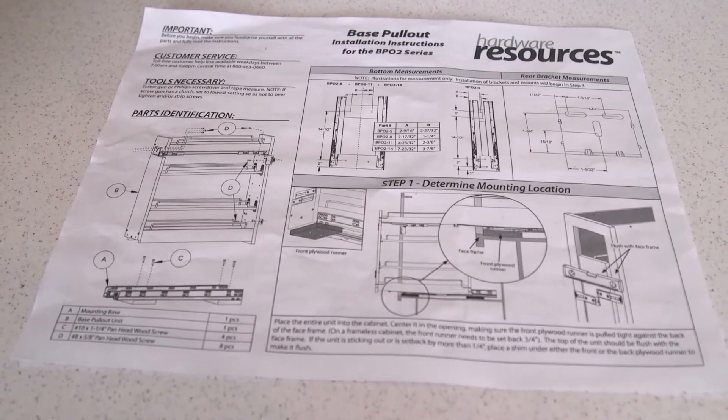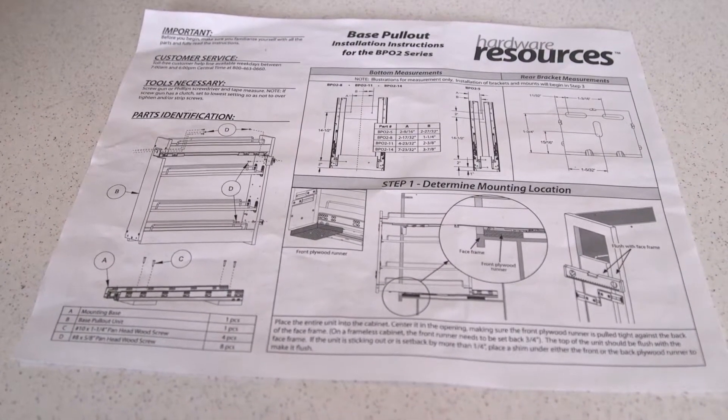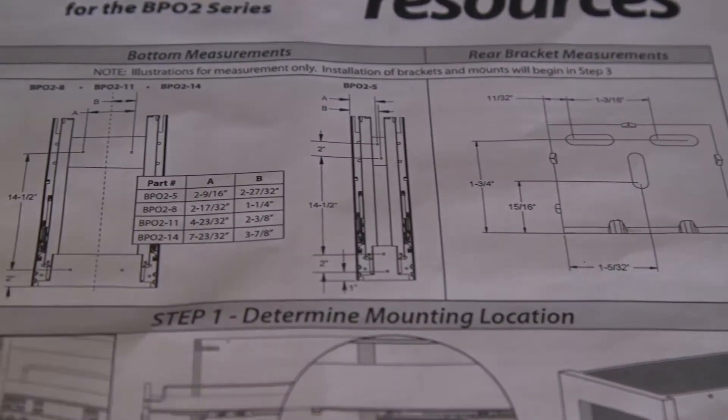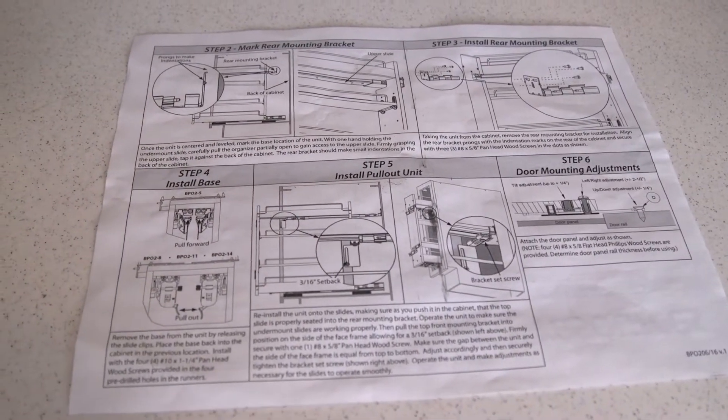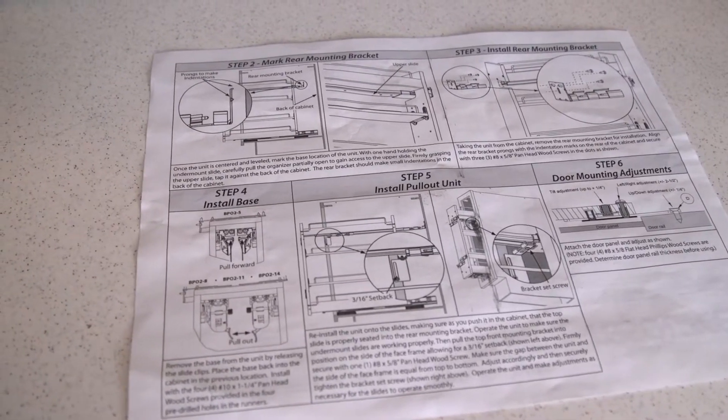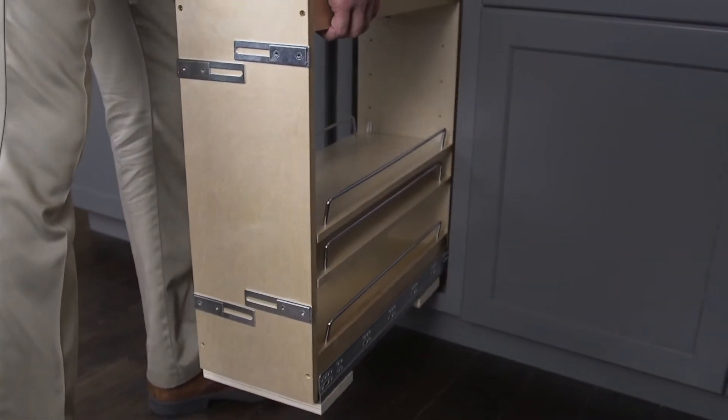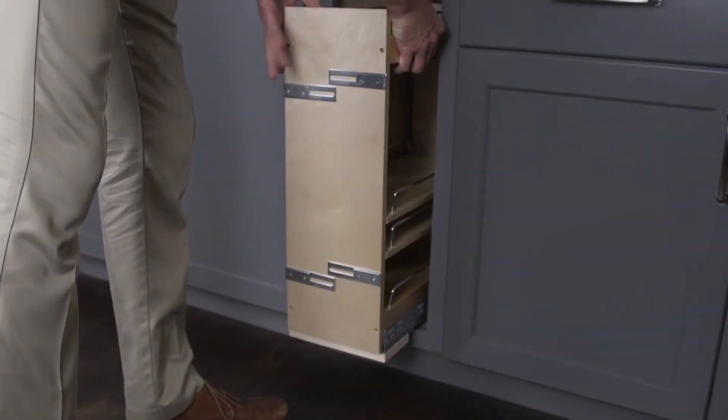The instructions provide measurements for installing your pullout but are not necessary for the install. Please familiarize yourself with the rest of the instructions before beginning this installation process. Install the entire unit into the cabinet and center in the finished opening.